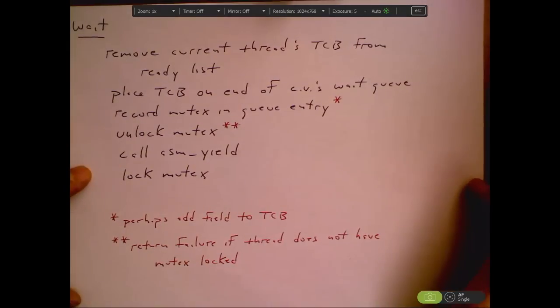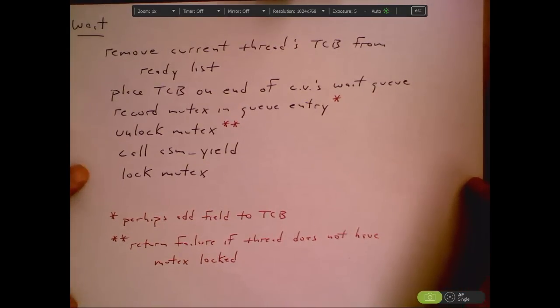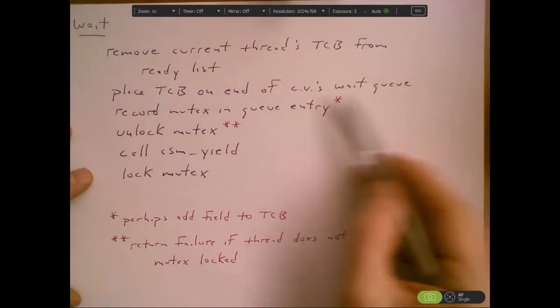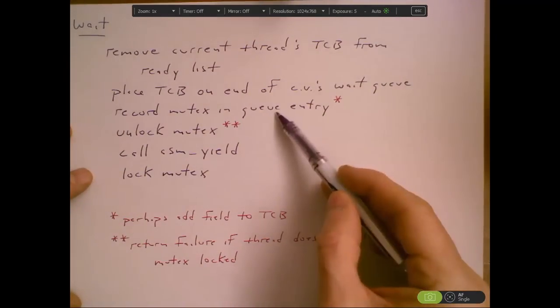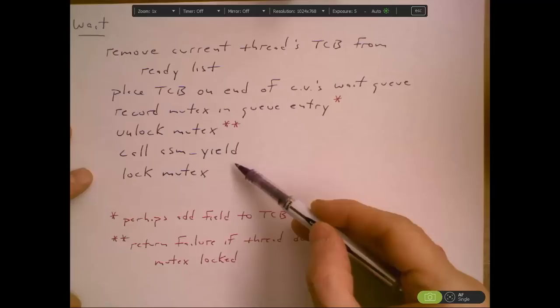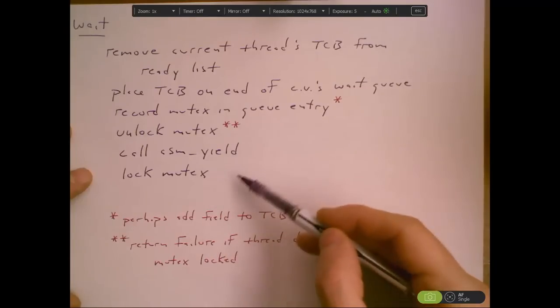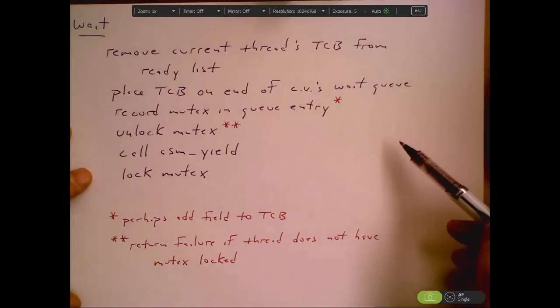Of course, we'd have to really do that check before we pull our TCB off the ready list. So I'm being a little fuzzy here. But once we've got our TCB in the wait queue and we've recorded the mutex and we've unlocked the mutex, then we can call ASM yield to let somebody else run while we're blocked. When we wake up then, we lock the mutex and carry on.